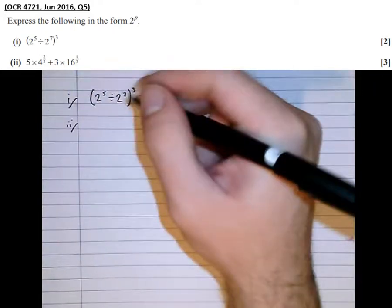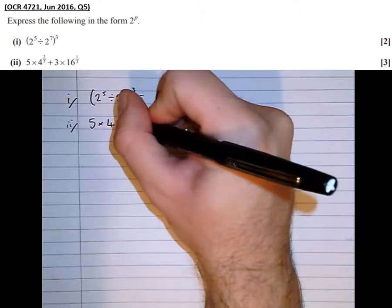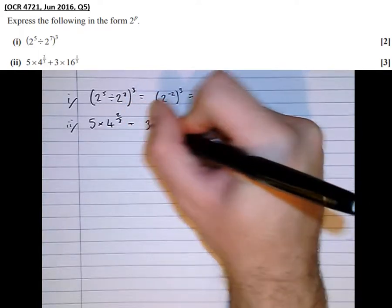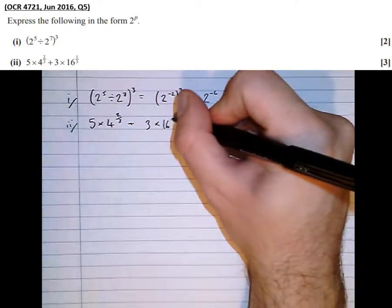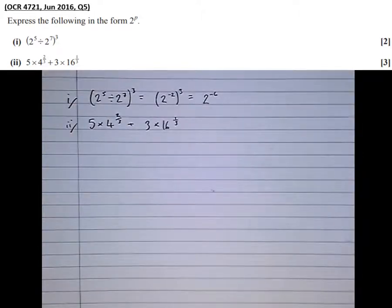But now for the difficult part. We've got 5 times 4 to the power of 2 thirds plus 3 times 16 to the power of 1 third, and we need to write those as powers of 2.